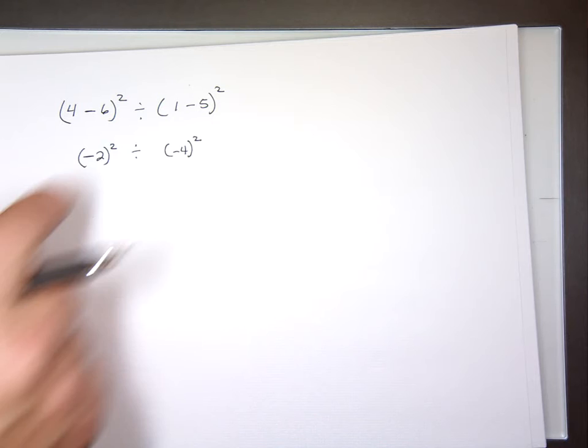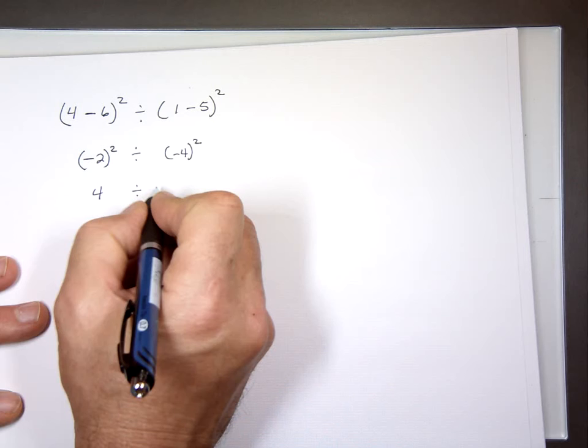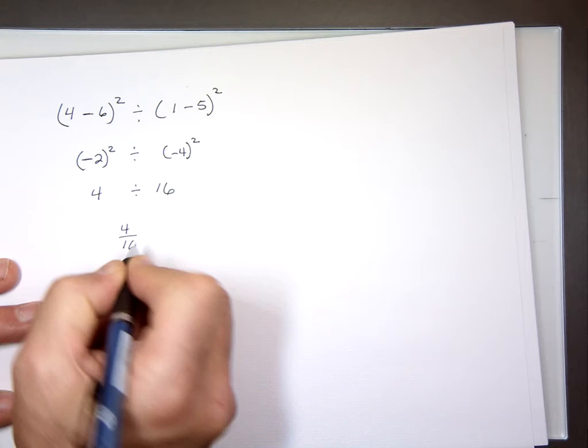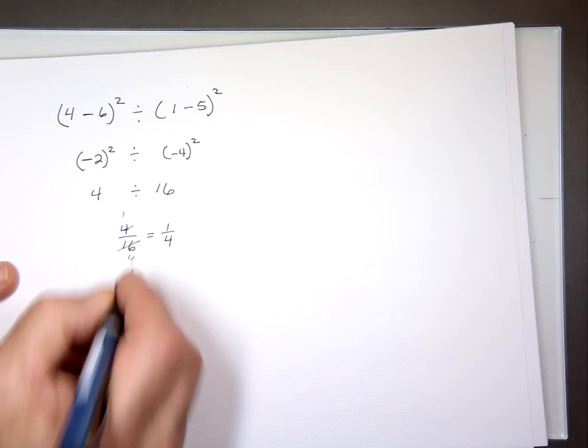What's negative 2 squared? 4. What's negative 4 squared? Negative 4 times negative 4 is 16. So your answer is 4 over 16. Can you simplify 4 over 16? Divide both by 4: that gives you one-fourth.